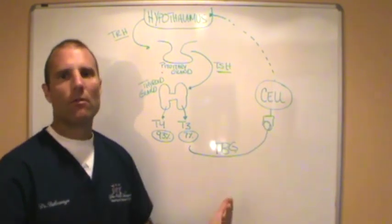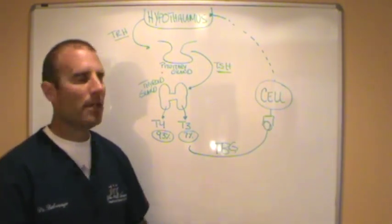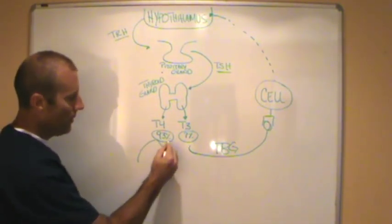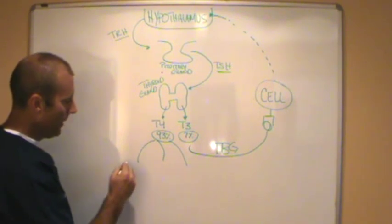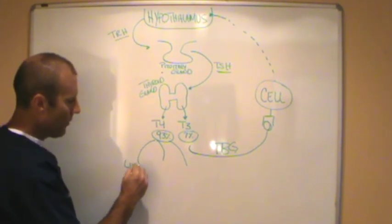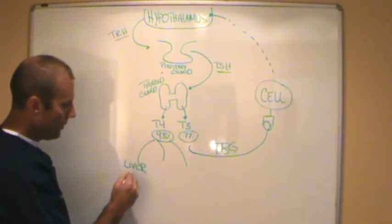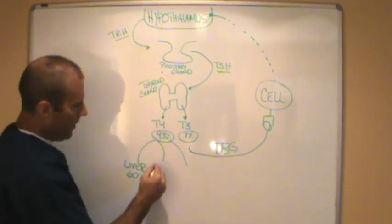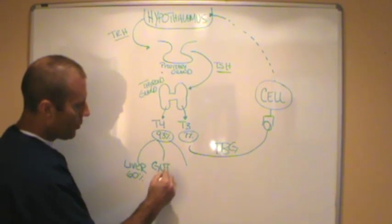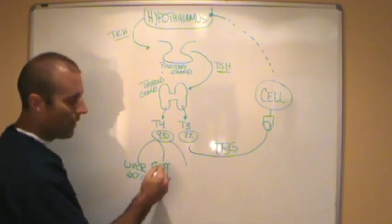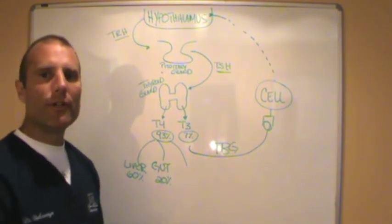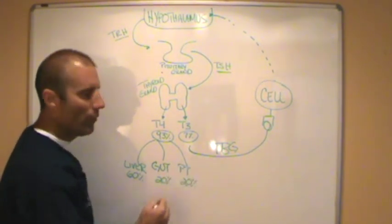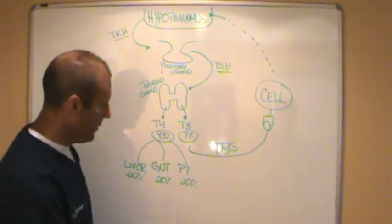The other thyroid hormone, T4, must go off to a couple areas to be converted into T3. Some of that thyroid hormone goes to the liver to be converted into T3—that's about 60% of that T4. About 20% goes to the gut or the GI tract to be converted into T3, and another 20% goes off to the peripheral tissues to be converted into T3.